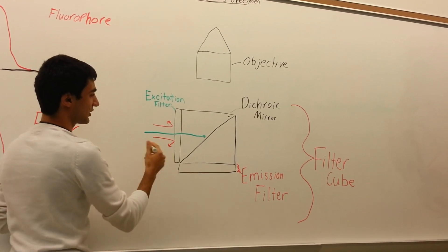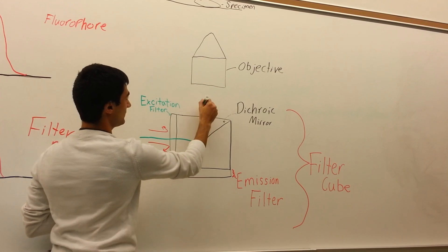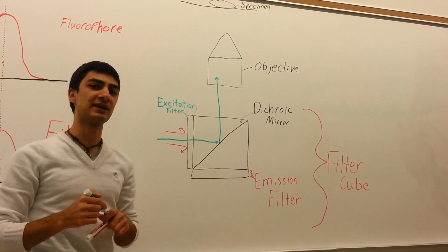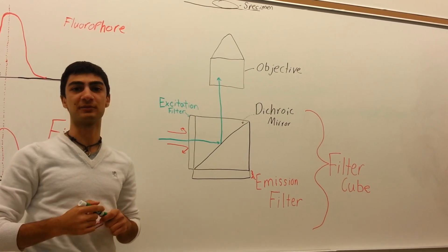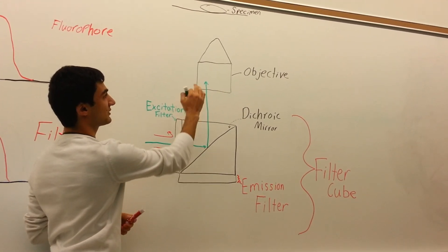Green light is going to bounce off the dichroic mirror, go up, and then go straight to the objective. Notice that the light does not go through a condenser like other forms of microscopy, such as DIC or phase contrast.